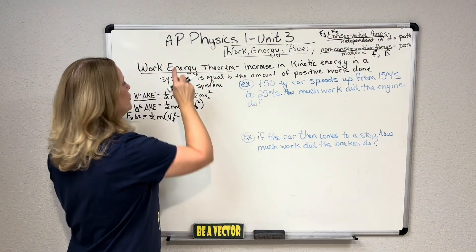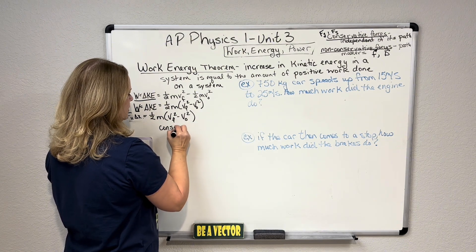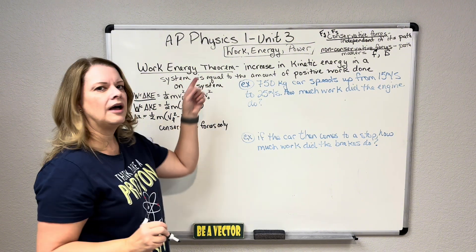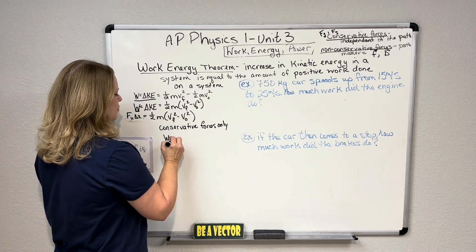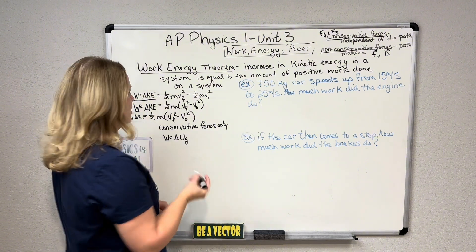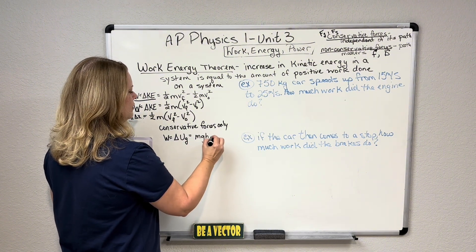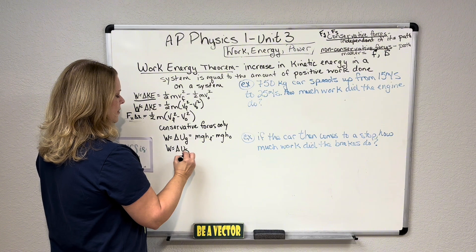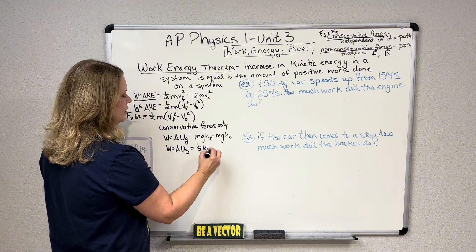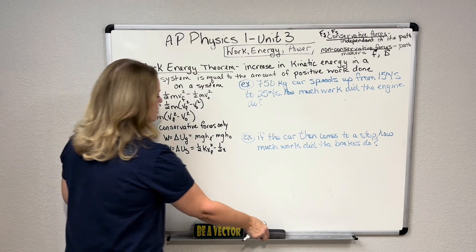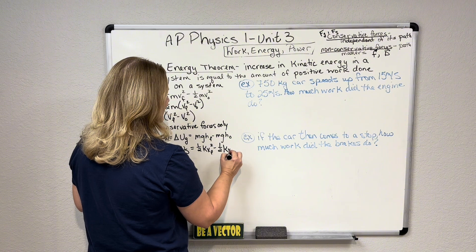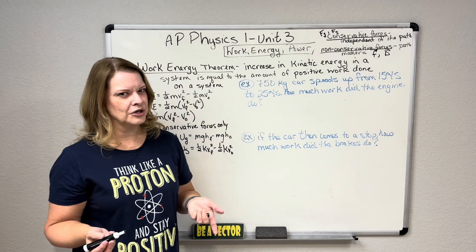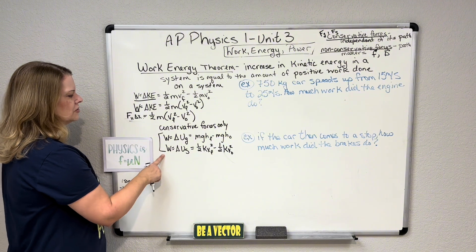For conservative forces only — don't try this with drag or friction — you can apply the work energy theorem. That would look like: work equals the change in potential energy due to gravity, so M·G·H_final minus M·G·H_initial. Or work could equal the change in spring potential energy: one half k times x_final squared minus one half k times x_initial squared. Just know that's not really what the work energy theorem was meant for — it was meant for kinetic energy mostly — but it does apply for conservative forces.